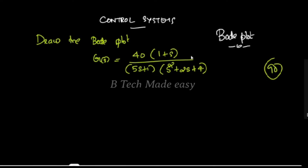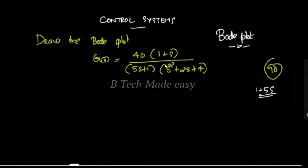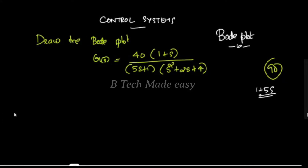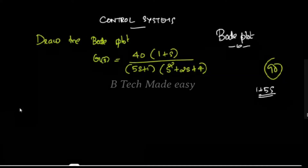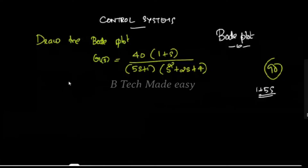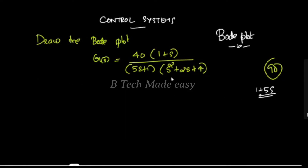First, the problem involves the time constant. In this case, (5s + 1) is written as (1 + 5s), which is the time constant form. You can find the Bode plot and the time constant form.